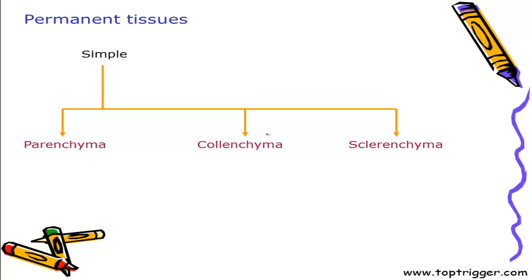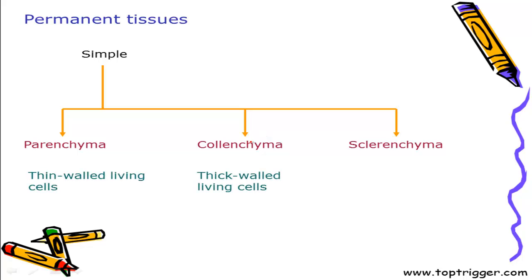Parenchyma is living cells and since it is living, thickening is actually not present. Cell wall is made up of cellulose. In case of colenchyma, it is thickened — thickening is present — and it is also living. But in case of sclerenchyma, it has a thick wall but it is a dead tissue.